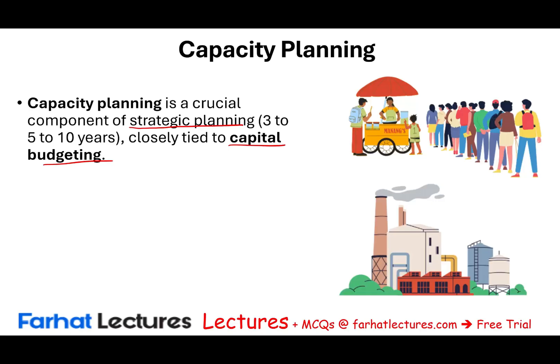When you plan — say, you want to increase your market share — you need people, technology, and resources. That's part of your capacity, so you need to plan your capacity ahead of time. And usually if you're planning to produce more and increase market share, you need to do what's called capital budgeting.